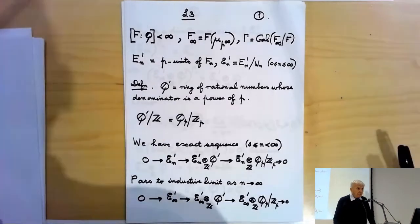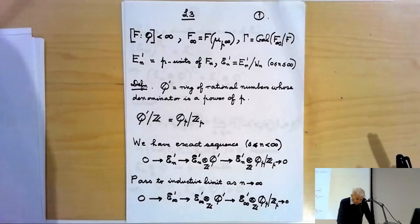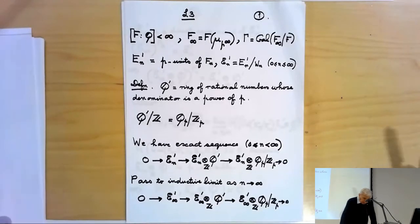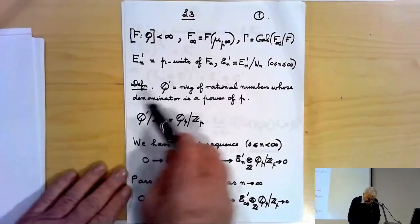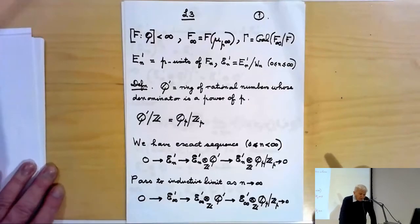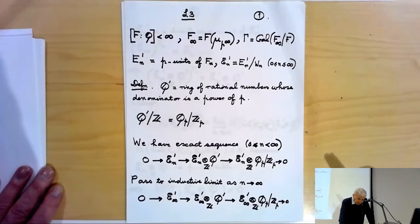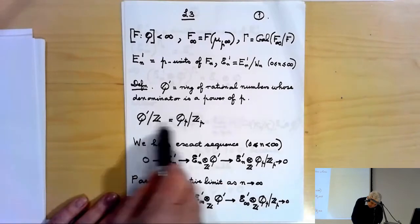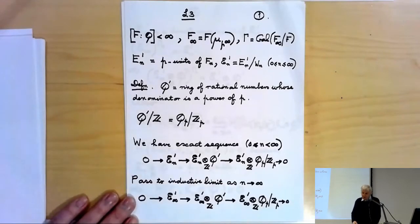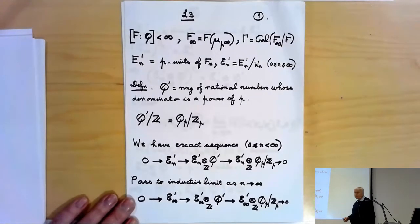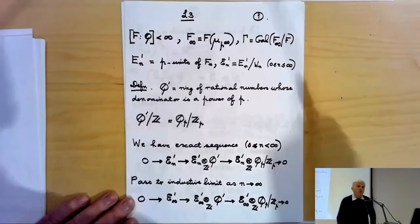I'm following Iwasawa's proof in his paper closely. I write Q' for the ring of rational numbers whose denominator is a power of p — in other words, the localization of Z at the prime ideal p. It's obvious that Q' modulo Z is the same as Q_p modulo Z_p.